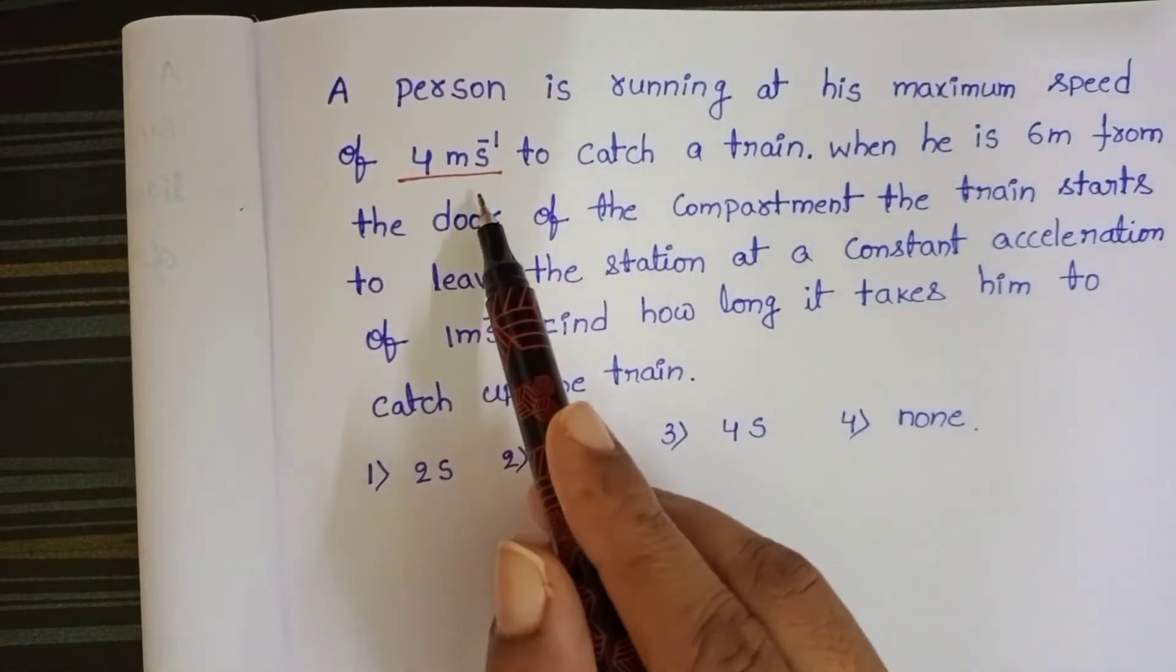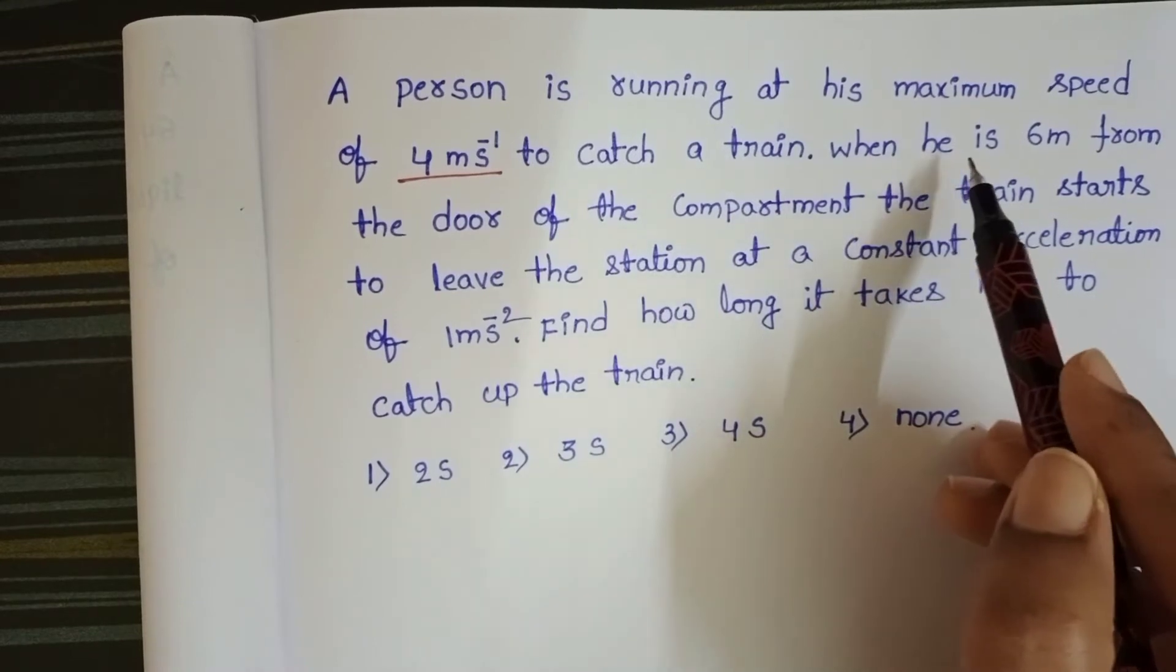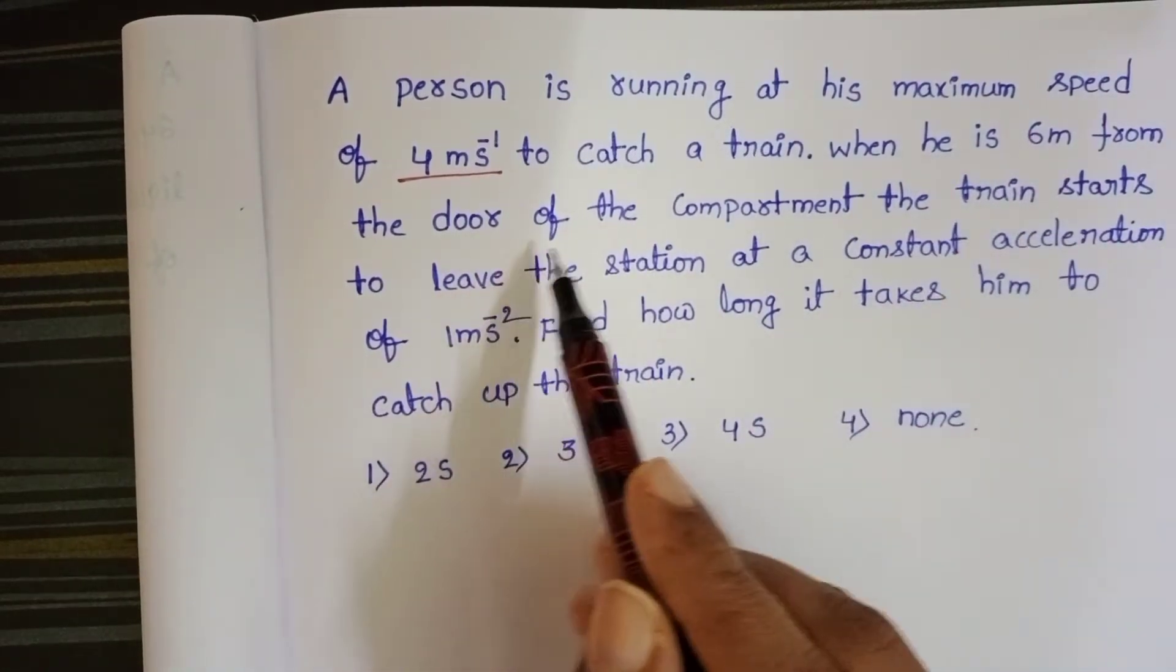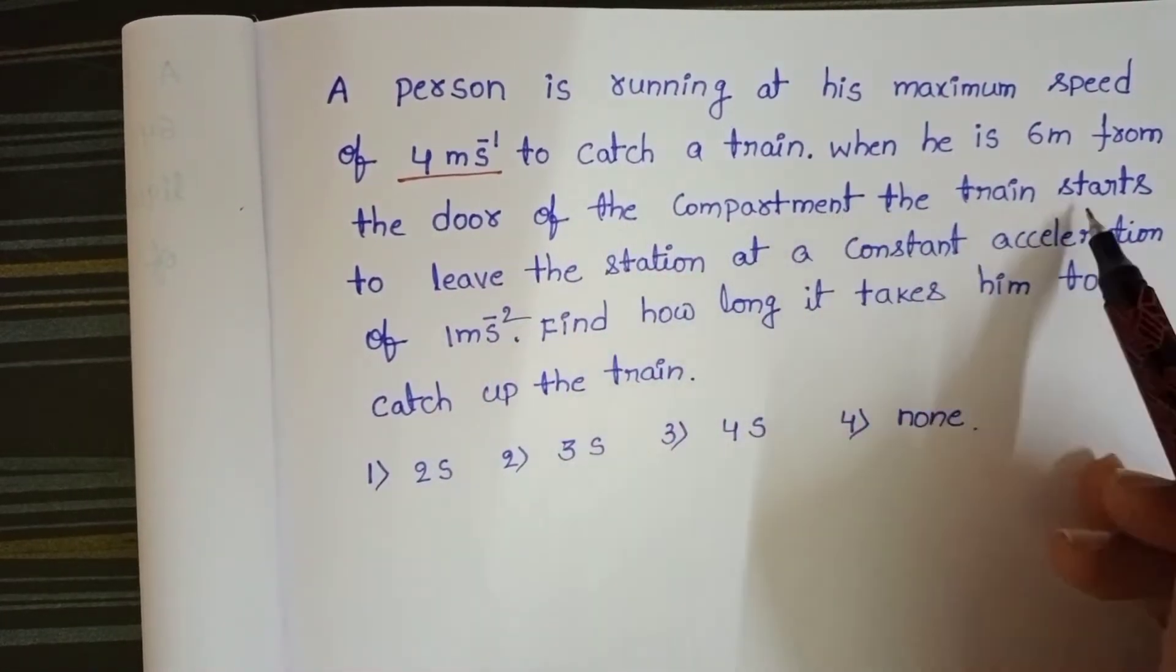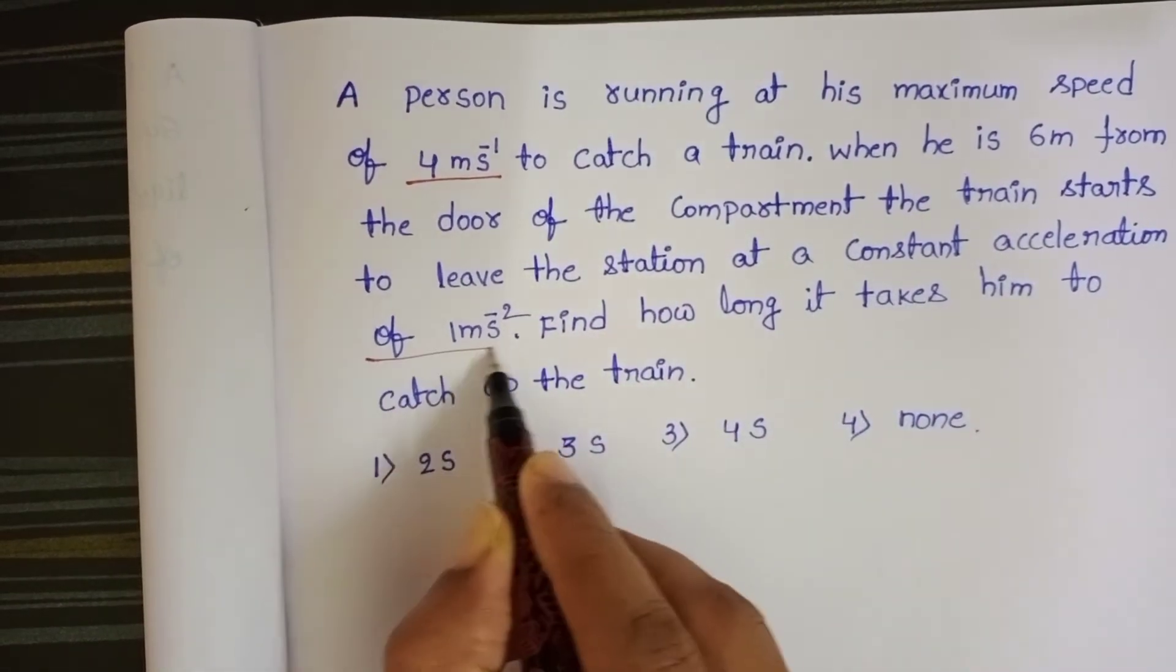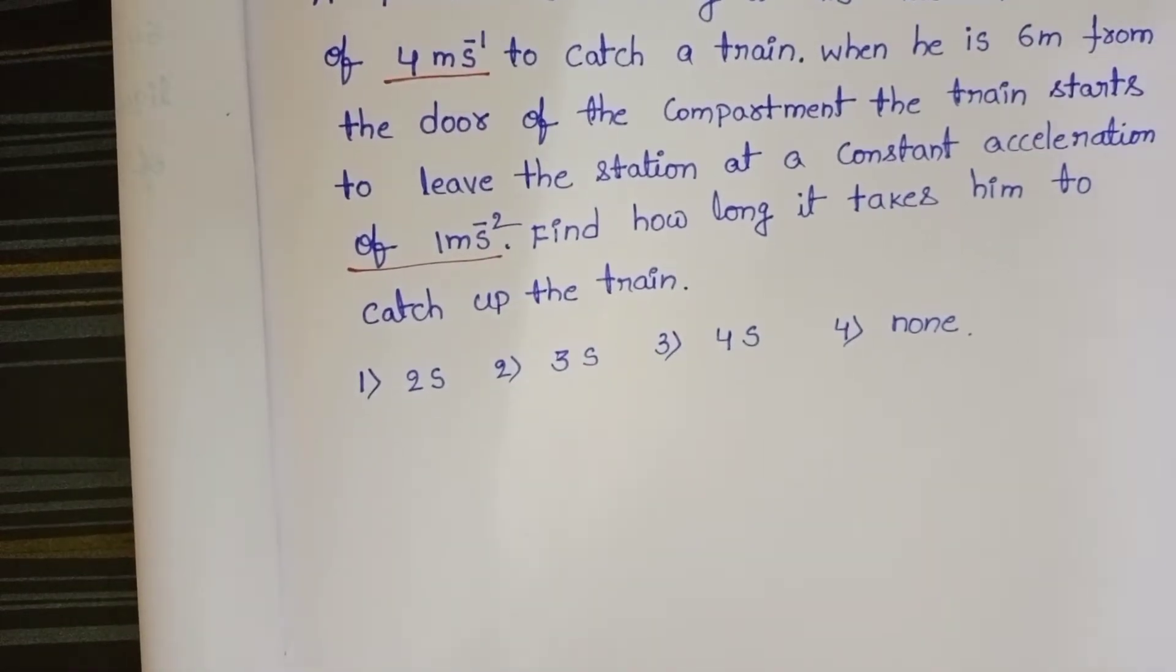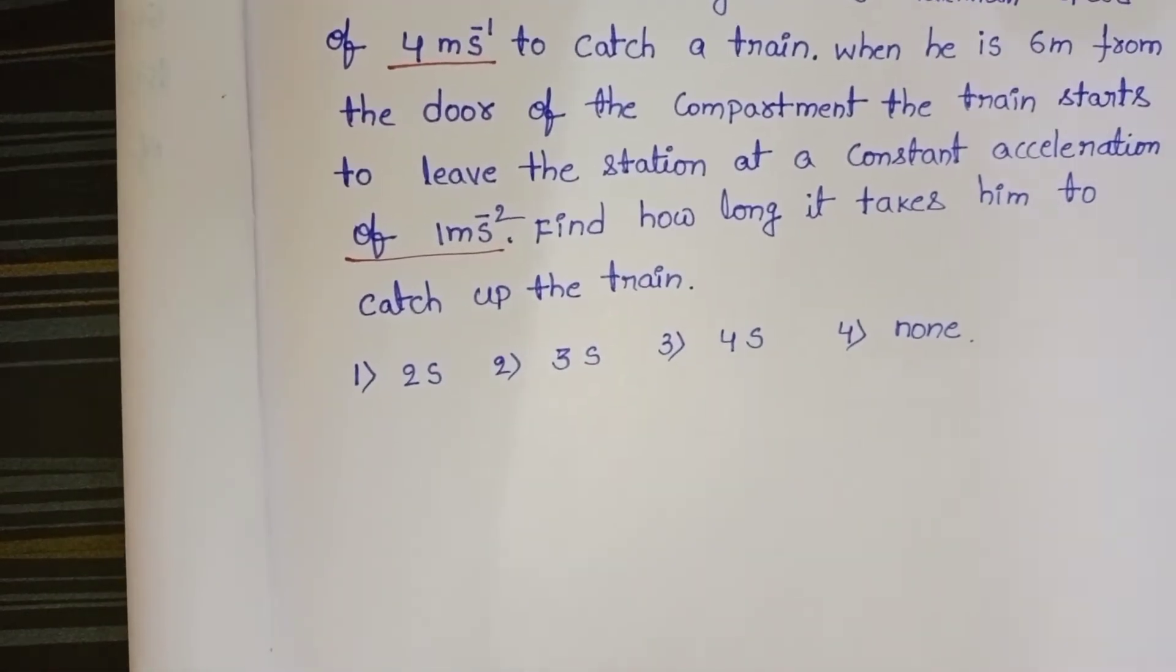A person is running at his maximum speed of 4 meters per second to catch a train. When he is 6 meters from the door of the compartment, the train starts to leave the station at a constant acceleration of 1 meter per second squared. How long does it take him to catch up the train?